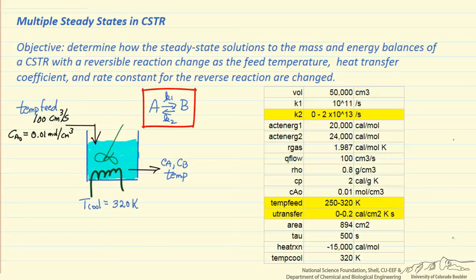Here we're going to look at a reversible reaction, first order in each direction, and look at the effect of changing the value of the pre-exponential factor of the rate constant k2, the feed temperature, and the heat transfer coefficient.